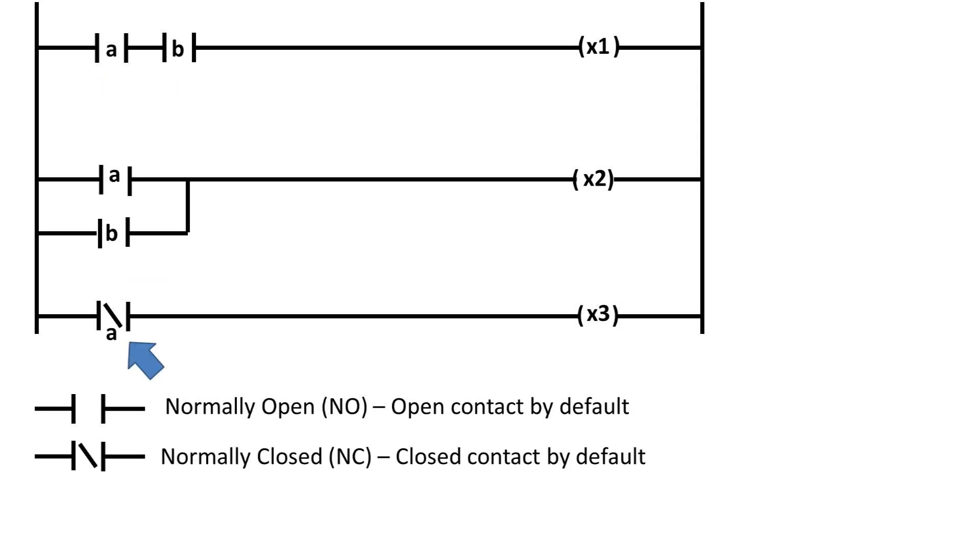And normally closed, which means by default, the circuit is closed or connected until you activate the contact, then it is open or not connected. Normally closed is two parallel lines with a diagonal line to represent that it is closed or connected by default.